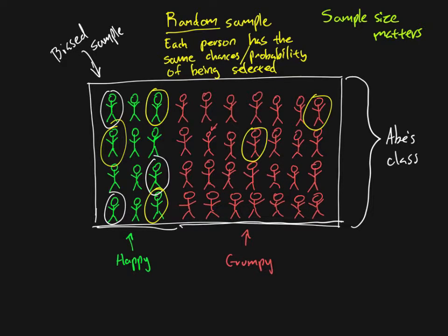So if I flip a coin enough times with a fair coin and I'm really doing things randomly, I will start to get about 50% heads and 50% tails. Similarly, if I am doing my selection randomly, as the size of my sample gets larger, the sample becomes more similar to the population. I'll start to get a more accurate representation — more people who are unhappy than happy, reflecting that in the population, more people are unhappy than happy.